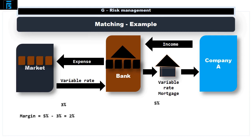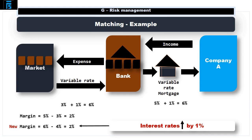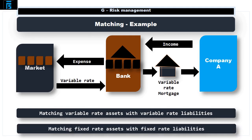The initial profit of the bank will be 5 less 3, which is 2%. If interest rates on the market rose by 1%, then the income from the customer would increase from 5% to 6%, and the interest we have to pay to finance that customer would increase from 3% to 4%. The bank's income is still 6 minus 4%, or 2%. This protects the bank's exposure to increases and decreases in interest rates. If the customer had originally asked for a fixed rate mortgage, the bank could finance this with a fixed rate loan. In other words, the bank is matching variable rate assets with variable rate liabilities and matching fixed rate assets with fixed rate liabilities.